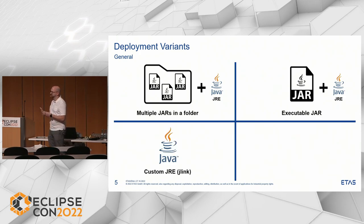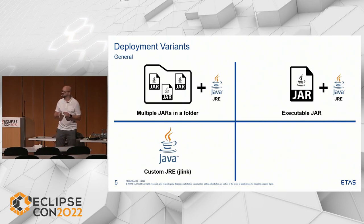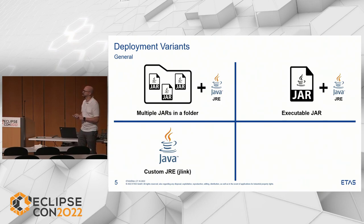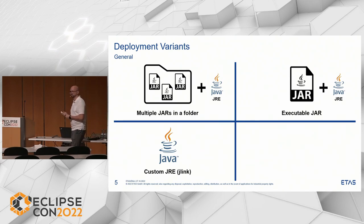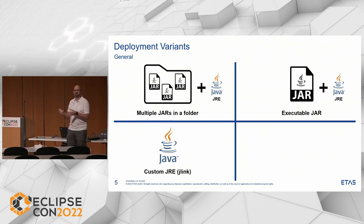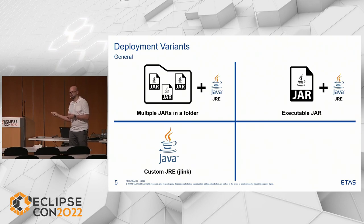Since Java 9 there is another option: you can create a custom runtime image using the jlink tool provided by the JDK. That is not known by many people still, especially in the OSGI context, because it was not previously possible to build it. In that case you build your custom runtime image and you don't need the runtime installed on your system to run your application.